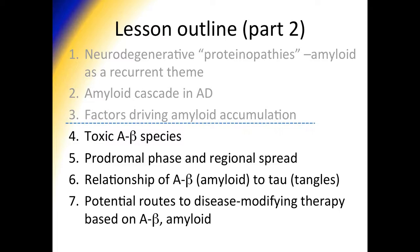In part one of this series, I covered the first three points in the lesson outline: neurodegenerative proteinopathies, and amyloid as a recurrent theme in Alzheimer's, Lewy body dementia, Parkinson's disease dementia, and frontotemporal dementia. I also reviewed the amyloid cascade in Alzheimer's disease as a key element of disease pathogenesis — amyloid as an initiator of the process of disease — and we focused on the genetic factors that drive the accumulation of amyloid in disease.